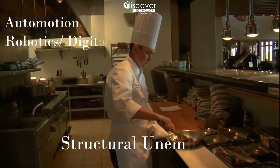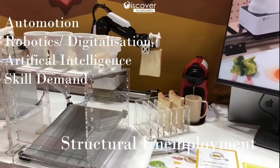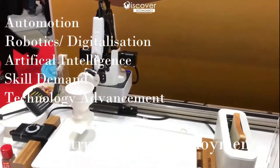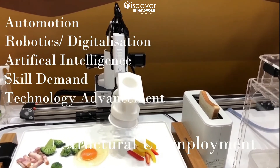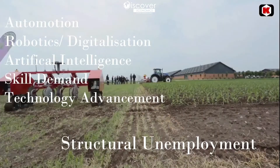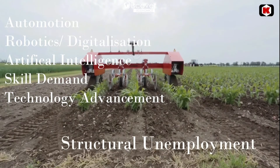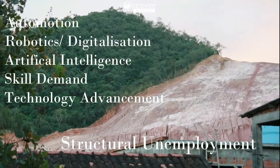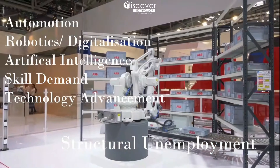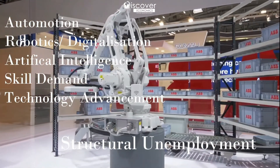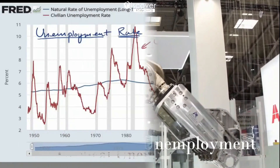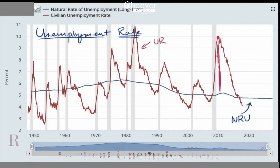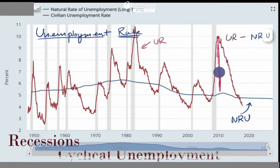Structural unemployment tells us that with the transition of economies, jobs are disappearing and changing significantly, especially lower-scale jobs and some high-scale jobs too. Structural unemployment is a form of involuntary unemployment caused by a mismatch between the skills that workers can offer and the skills demanded by companies. Robotics, automation, digitalization, artificial intelligence, skill demand, and technological advancements are the types of structural unemployment.